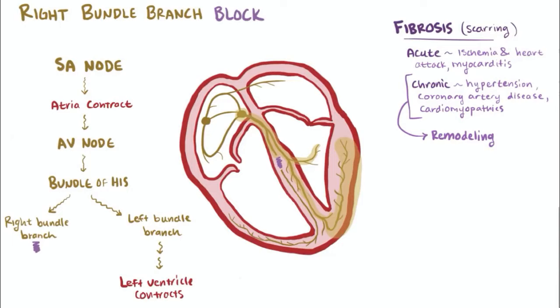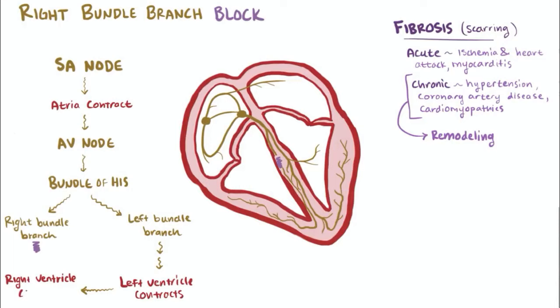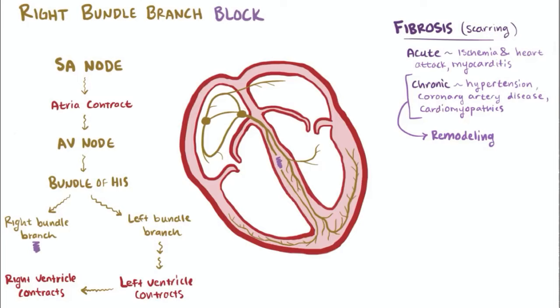And so the left ventricle contracts first. The signal then spreads from the Purkinje fibers of the left ventricle over to the right ventricle, which contracts, but this happens after the left contracts. So with the right bundle branch block, the right ventricle contracts late.